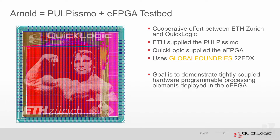Working with ETH Zurich, taking PULPissimo and the EFPGA, we decided to build this test bed to try out these theories. ETH supplies PULPissimo, we supply the EFPGA, using GlobalFoundries 22FTX process because it gives very nice low-power performance. The goal is to demonstrate tightly coupled hardware processing elements based in FPGA. The guys at ETH really worked hard, did all of the layout, gave us a wonderful logo on top of our chip, and tape-out is happening in the next couple of days.